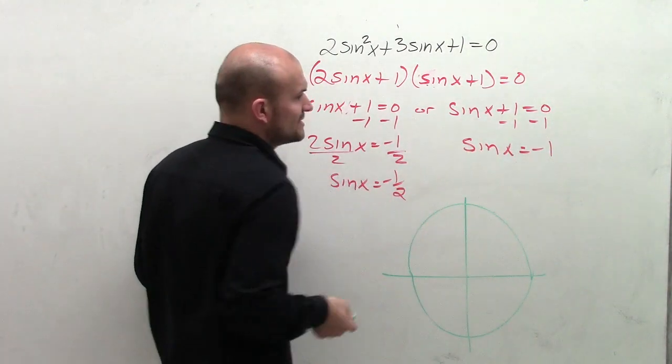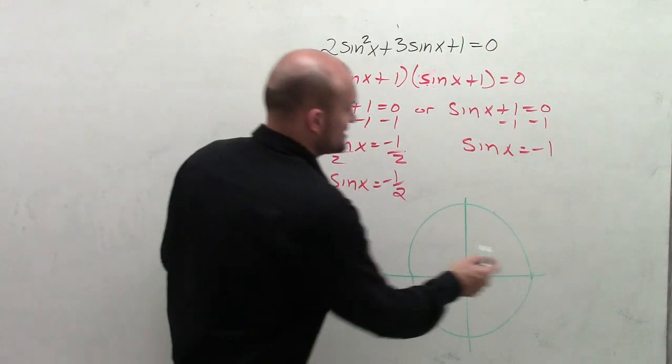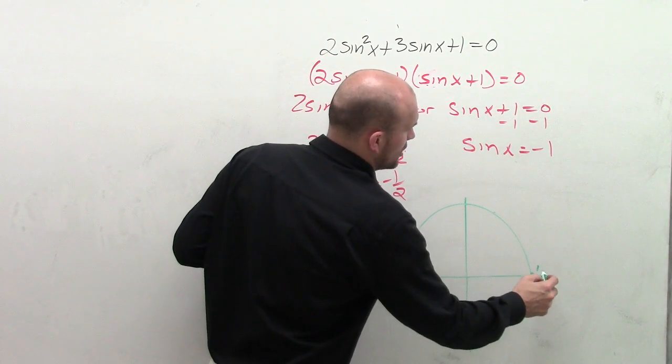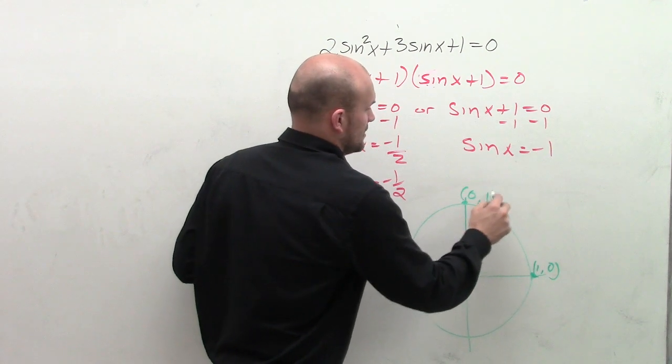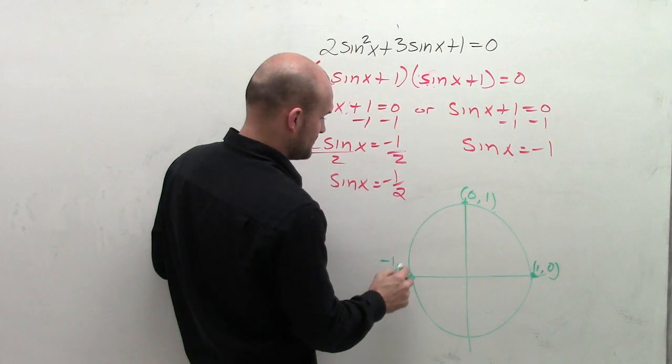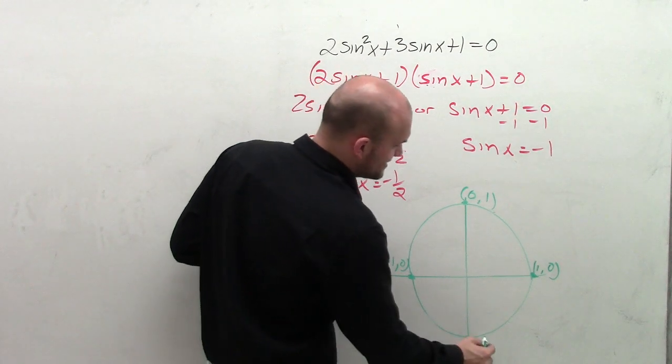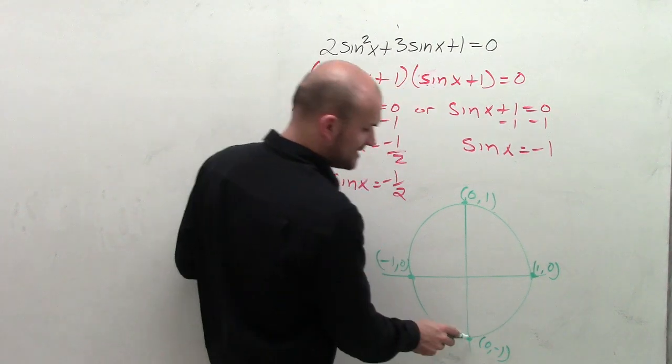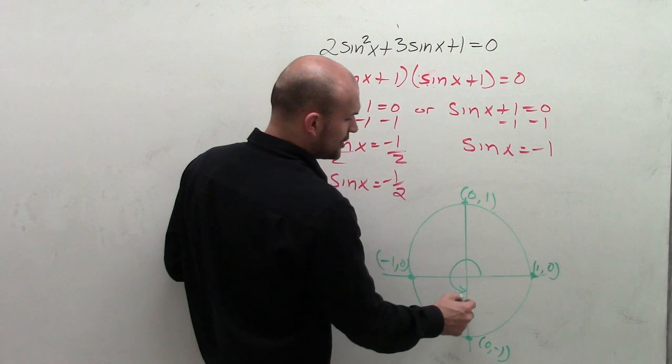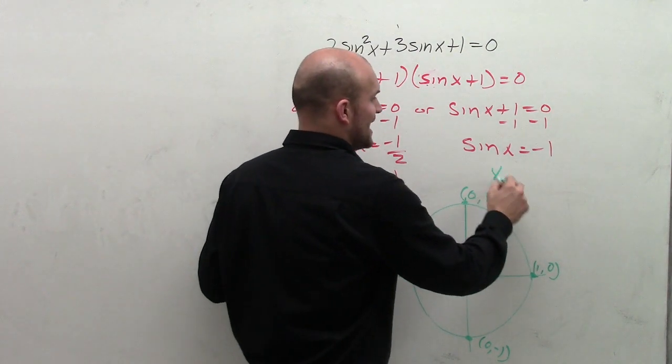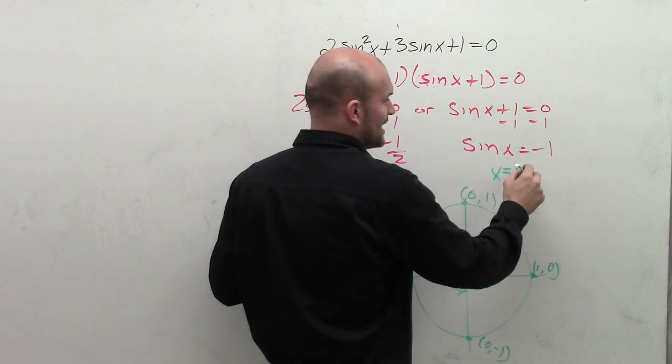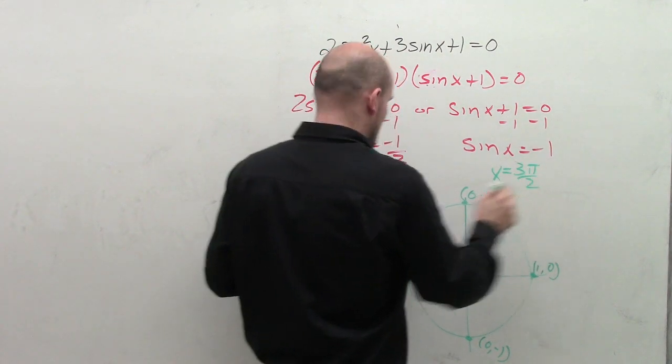So first of all, let's find the point when sine of x equals negative 1. Remember, that's going to be your y-coordinate. So we know that is going to be dealing with some kind of intercept. I'm going to write in all the intercepts here. And you can see that the only point when sine of x equals negative 1 is at this point down here, creating an angle of 3 pi over 2. So I can say for negative 1, x equals 3 pi over 2.